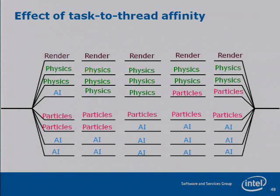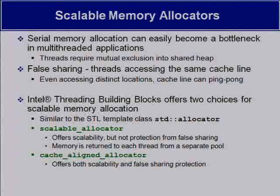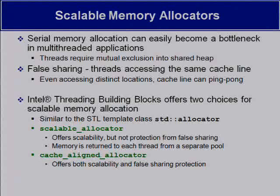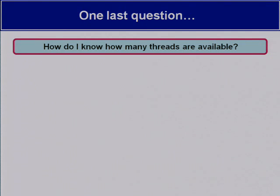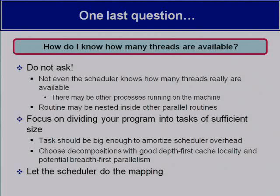I'll mention scalable memory allocators. These are important because malloc and new are typically locking operations - one thread wants it and the other threads wait. If you use a scalable one, they won't get in one another's way. It's possible to just reset your defaults on the compiler to use the TBB version. How do I know how many threads are available? In TBB, the answer is: don't ask, you can't know - not even the scheduler knows. This is by design, to force development in directions that move away from worrying about low-level threads.